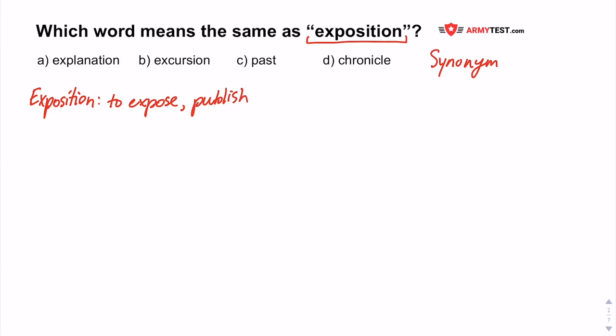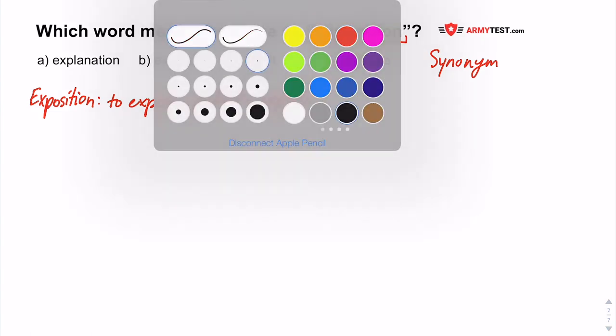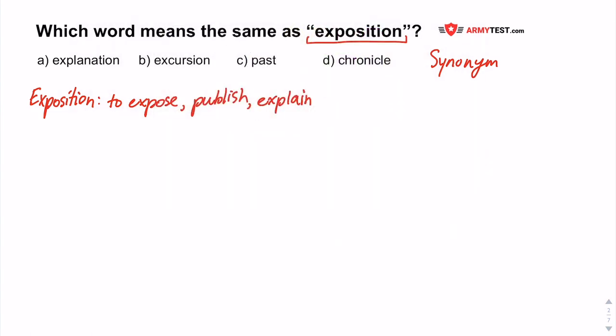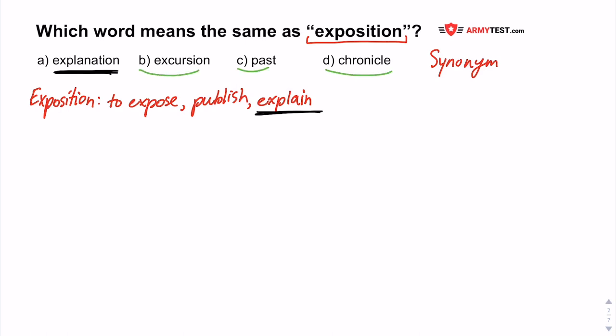You can see that one of the words given — namely A. Explanation — is actually in the definition of exposition, because it says 'to explain.' So in this case you can easily say A is the correct answer and move on. Although if it was not that obvious, I would suggest going through each of the options, defining each of them, and seeing which definition lines up best with the definition you came up with for the given word.